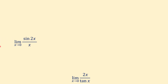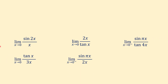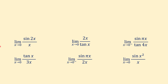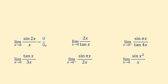In all of these limits, if we plug in 0 for x we get 0 over 0. For example, in the first limit if we plug in 0 for x we get sine of 0 over 0. Sine of 0 equals 0, so we have 0 over 0. We know that 0 over 0 is an indeterminate form and is not the answer of the limit. So to find this limit we should try another method.